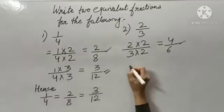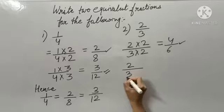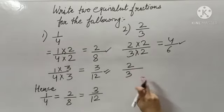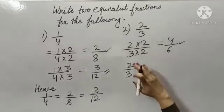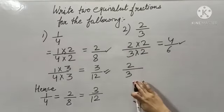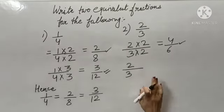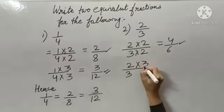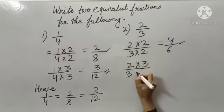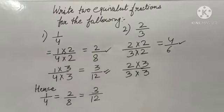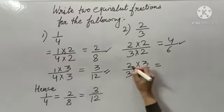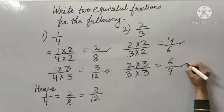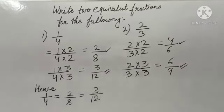Now again I have to find the equivalent fraction. So what I will be doing? I will write 2 upon 3 again. Now again I will multiply my numerator as well as my denominator with any number of my own choice. Here I am multiplying with 3 — my numerator as well as my denominator. So 2 times 3 are 6 and 3 times 3 are 9. So this is my second equivalent fraction.